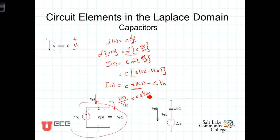And once again, we can come up with the alternative form. In this case, we started out with a parallel form to redraft this in the series form. We go through a source transformation where the voltage source is equal to the current source times the impedance, or this voltage source over here will be equal to C*V0 times 1 over sC.